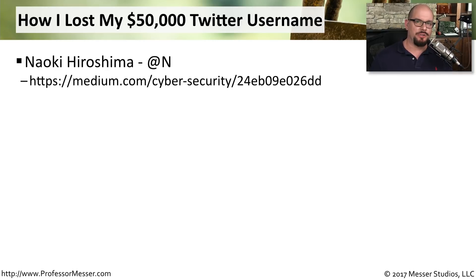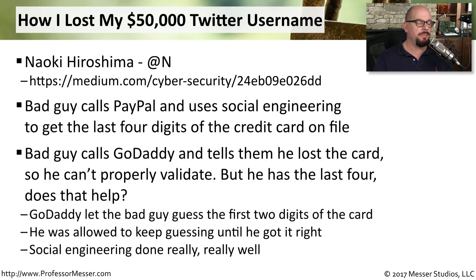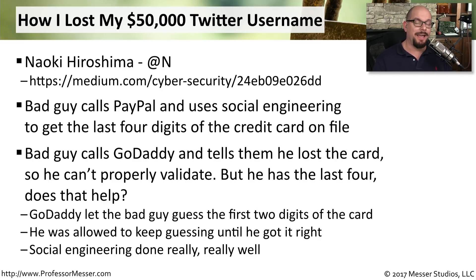One very frightening example of social engineering happened to Naoki Hiroshima. He has the Twitter username @n — as you can imagine, that is a pretty nice username to have. You can read all about this at his medium.com post. The bad guy called PayPal and used social engineering to learn what the last four digits of Hiroshima's credit card were. He then called GoDaddy — where Hiroshima had all of his websites — and said he lost his credit card but could validate himself with the last four digits. GoDaddy said he also needed to know the first two digits of the card, and for some reason GoDaddy allowed him to guess until he got it right. This obviously was not very good security from GoDaddy's perspective, but it was very good social engineering from the bad guy.